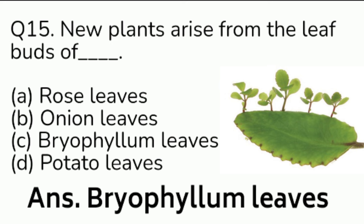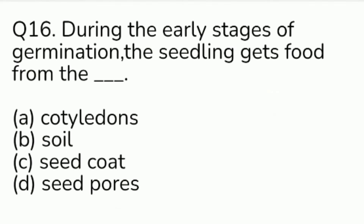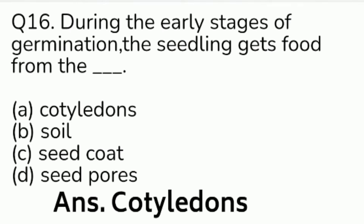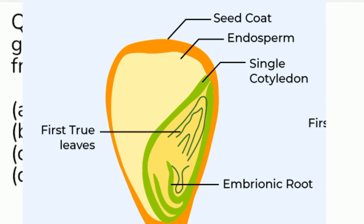Question number 16. During the early stage of germination, the seedling gets food from the — Option A: cotyledon. Option B: soil. Option C: seed coat. Option D: seed pores. Answer is Option A, cotyledon.